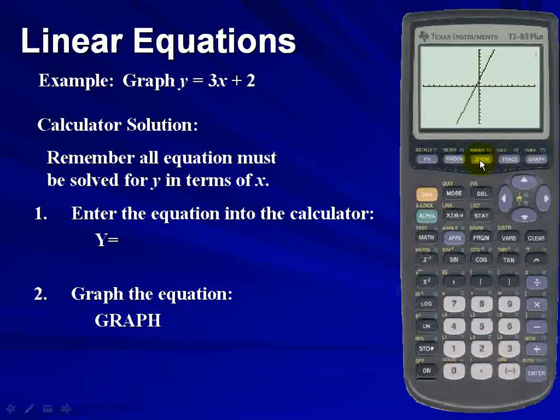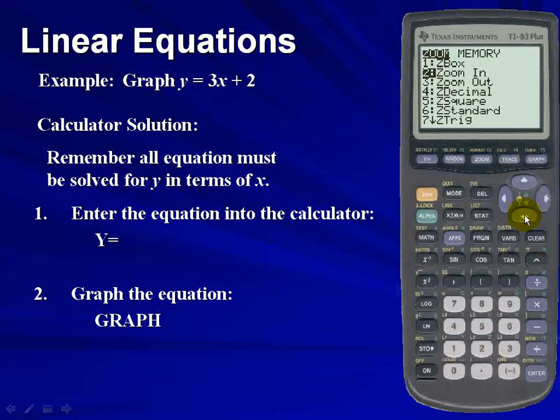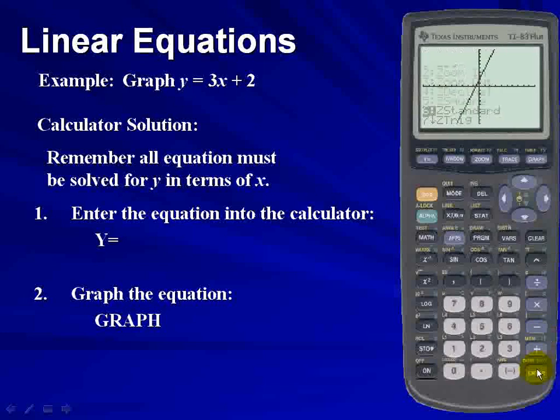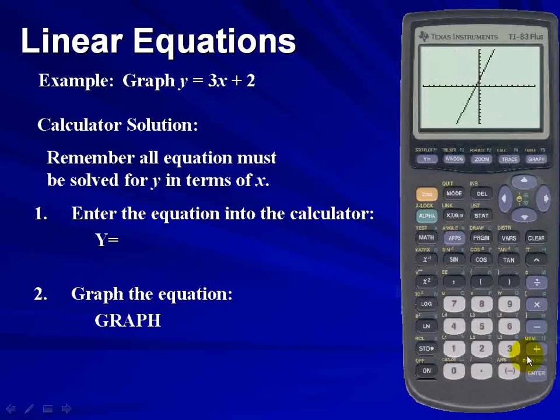You should scroll down to the 6th option, zoom standard. And what this option does is it puts your calculator with the settings negative 10 to positive 10 in increments of 1 for both the x and the y axes. And your graph should look as such.